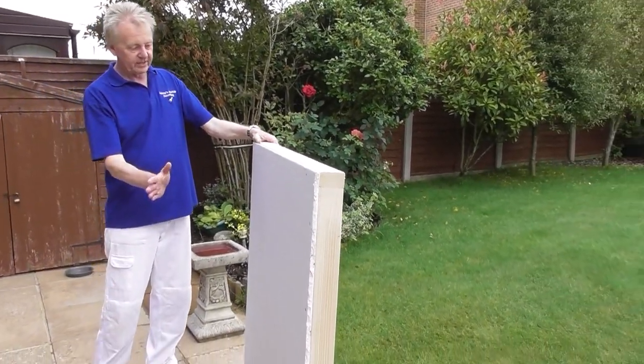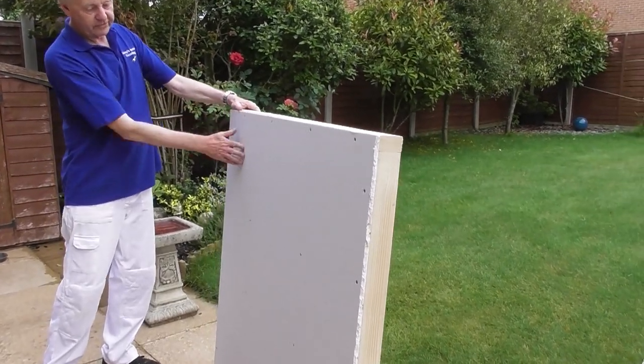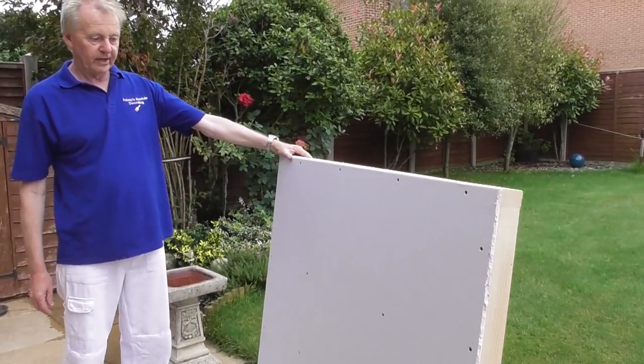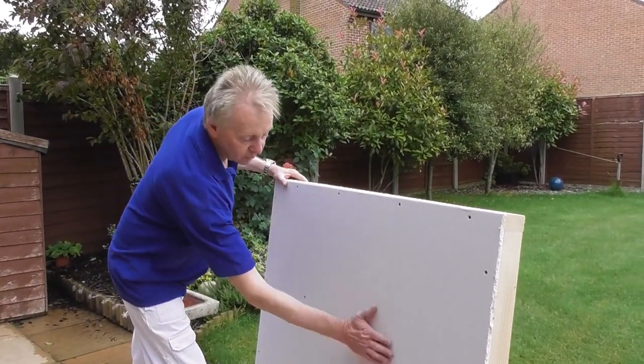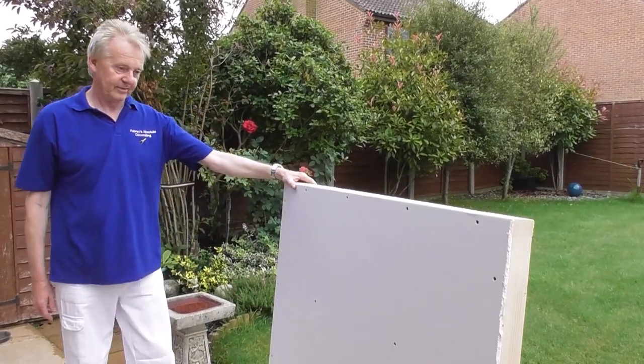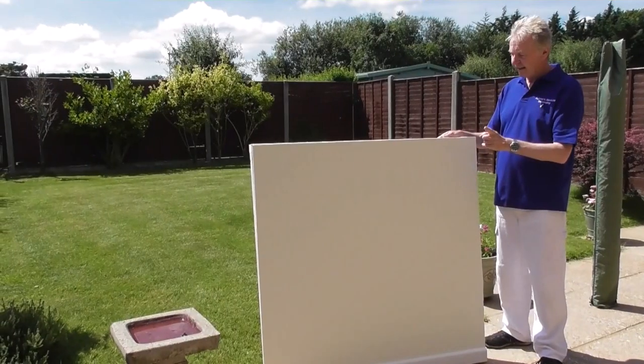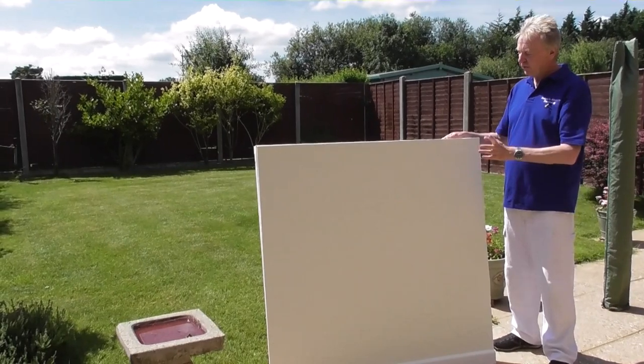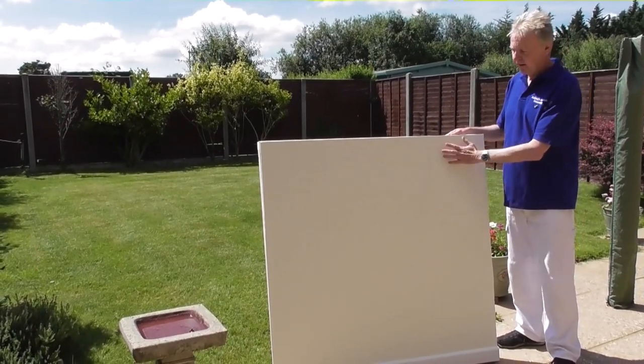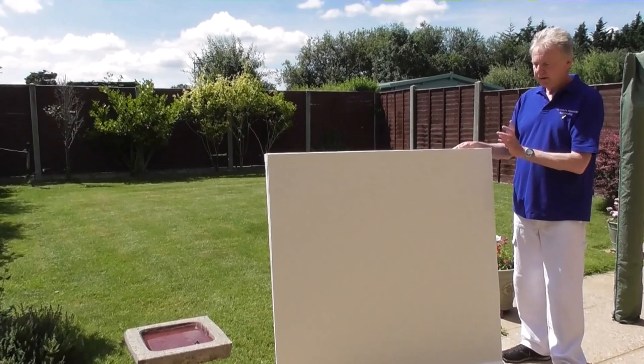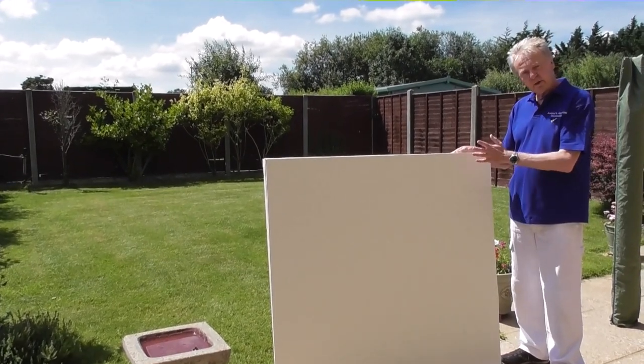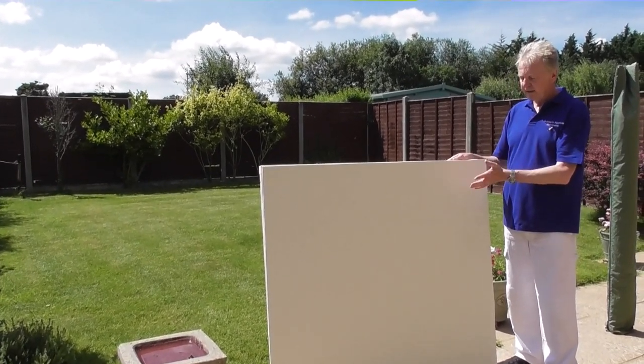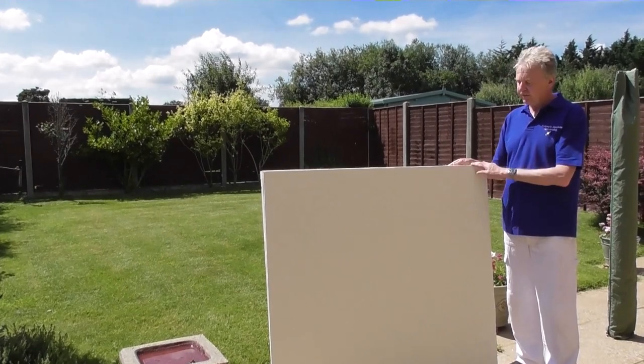The plasterboard is then screwed onto both sides of the studwork frame to give a nice flat wall finish. Finally, the paint is either applied directly over the plasterboard, like what I've done here, or the plasterboard is given a thin coat of plaster and then the paint is applied directly onto the plaster afterwards.